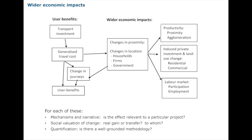Today I want to talk about the three elements of wider benefit that are probably quantitatively the most important and where we should be concentrating. First is the productivity argument — proximity, agglomeration, the benefit of cities. I think there are fairly well-established methodologies and a good empirical basis for that.